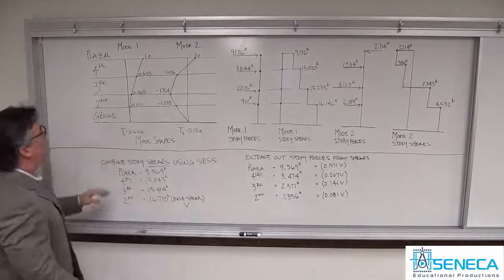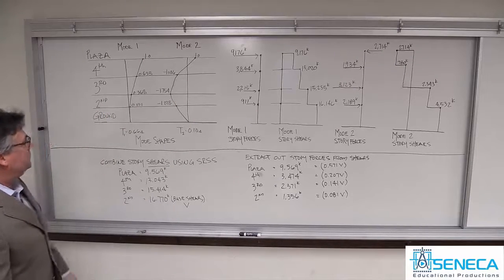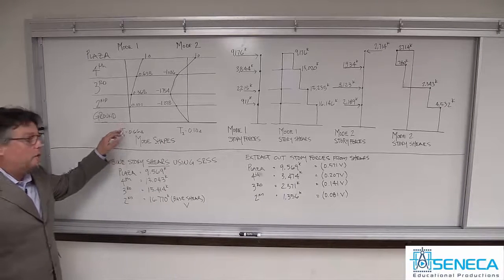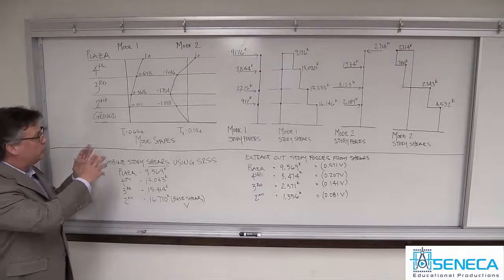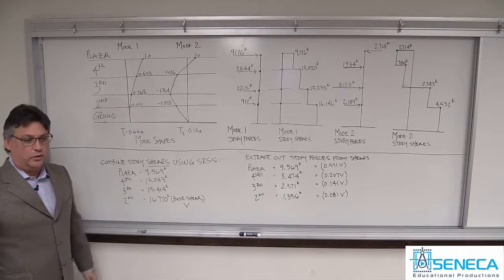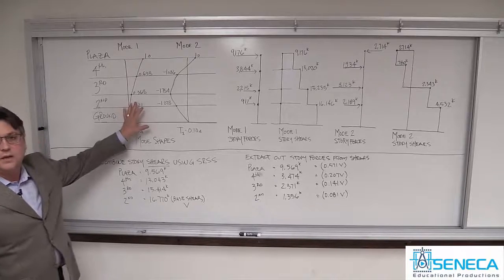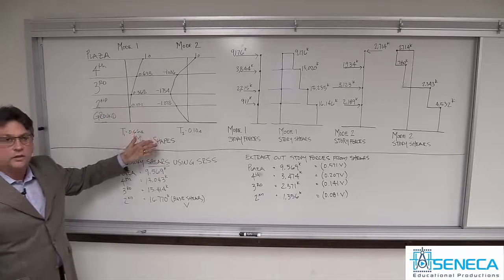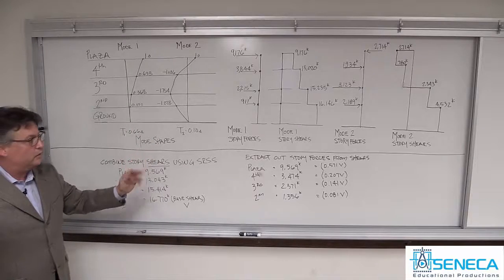Start with mode shapes. Mode shape one, the fundamental mode shape, and mode shape two — corresponding mode one and mode two period. This is the difficult part; this is what you need the computer for. There's a tremendous amount of eigenvalues, eigenvectors, and matrix analysis required to come up with this. You need a computer. You always have. I would never say this part should be done by hand. But once you have the mode shapes, frequencies, and corresponding periods, from that point on you can really do this by hand, and it is not difficult.